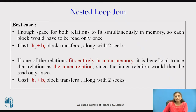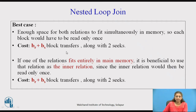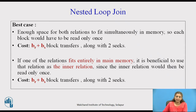In the best case, if there is enough space to hold both relations in main memory, each block is read only once — total block transfers = b_r + b_s with only 2 seeks. If only one relation fits in memory, it is better to keep the inner relation in memory since it will be read only once, also resulting in b_r + b_s block transfers and 2 seeks.